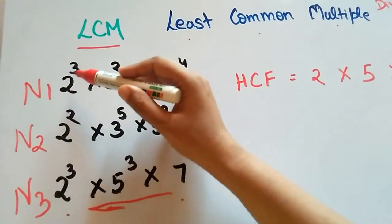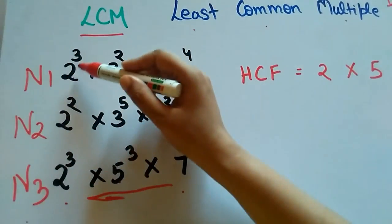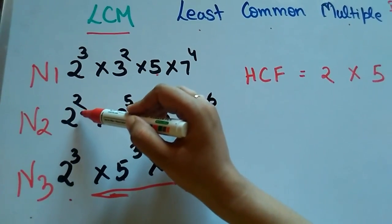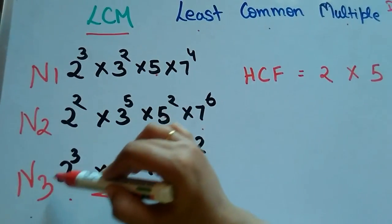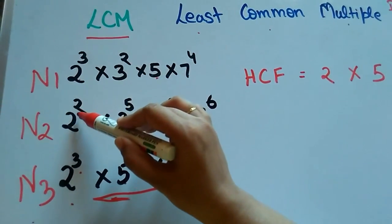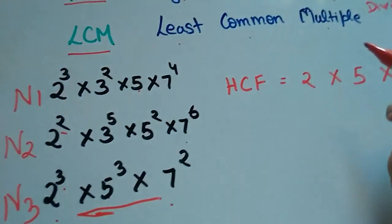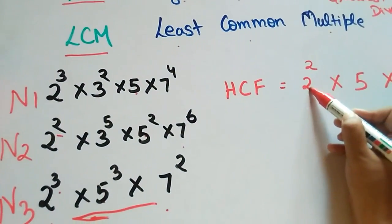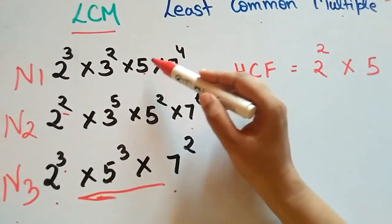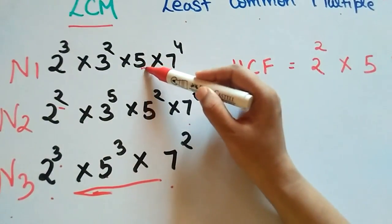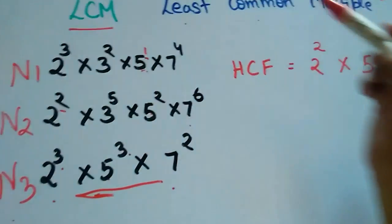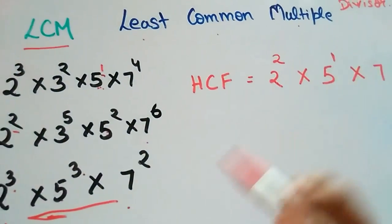Power will be the smallest one between all three numbers. So power of 2 is 3, 2, and 3. The least power is 2, so HCF has the power of 2. Now let's see for 5: 5^1, 5^2, 5^3. So least is 1.